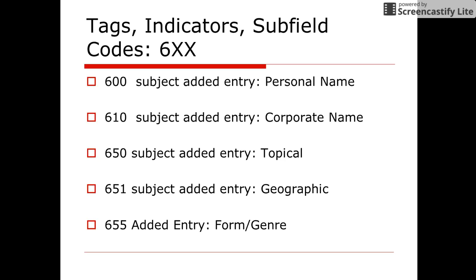These are the tags most often used in subject headings for school materials. Subject headings tell us what the book is about. Tags 600 to 651 are subject headings. Tag 655 is not a subject heading, but it is a related tag that deals with the literary form or genre of the work and can be used to access specific literary forms and genres within the collection. You might have a book about poetry or biographies or drama, in which case you could have a topical 650 tag subject heading using poetry or biography. That is not the same as the form/genre in which the book is a book of poems or a biography, which would be tag 655.